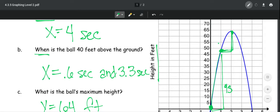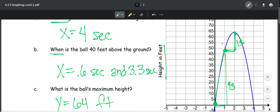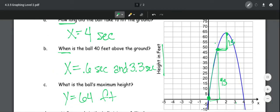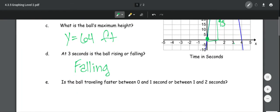to, so it only went 5, 10, maybe 15 feet. So you have to see the change in height. So the ball is traveling faster between 0 and 1 seconds because it went up higher in the same amount of time.